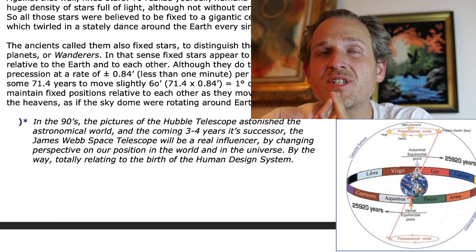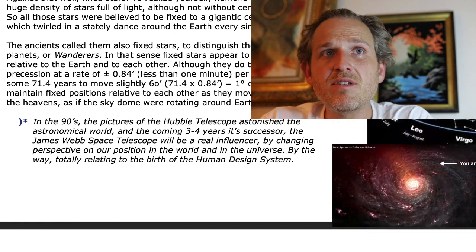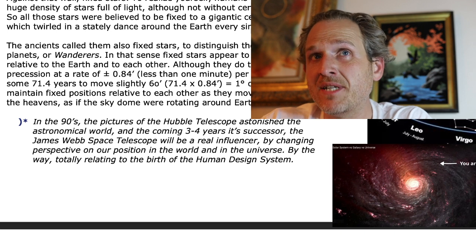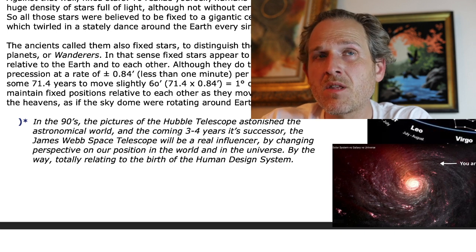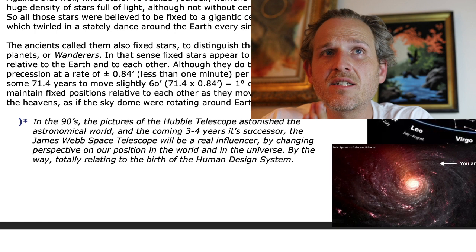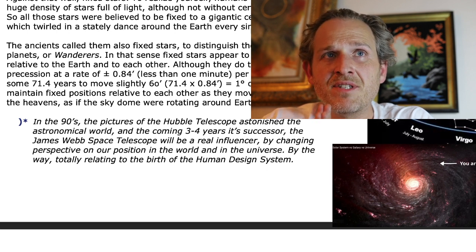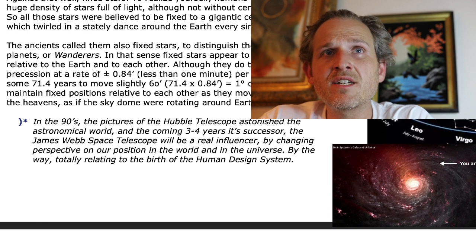Although they do travel, due to the precession of the equinoxes, at a rate of approximately 0.84 arc minutes per year — needing some 71.4 years to move slightly one degree of arc. The stars maintain fixed positions relative to each other as they move nightly across the heavens, as if the sky dome were rotating around Earth.